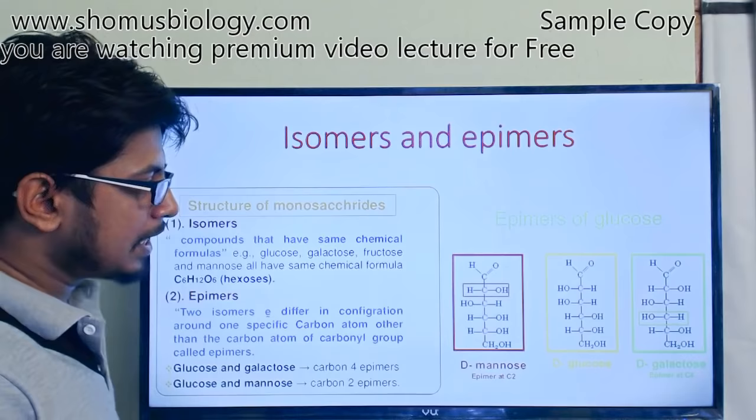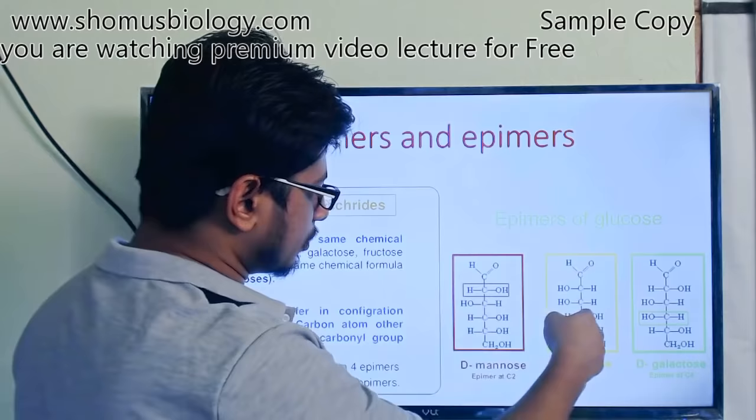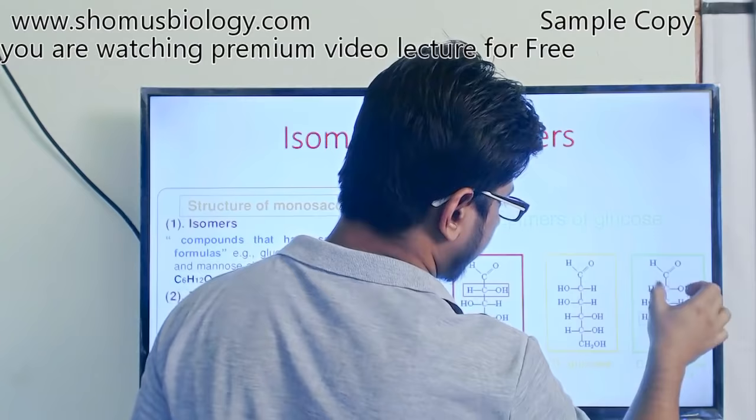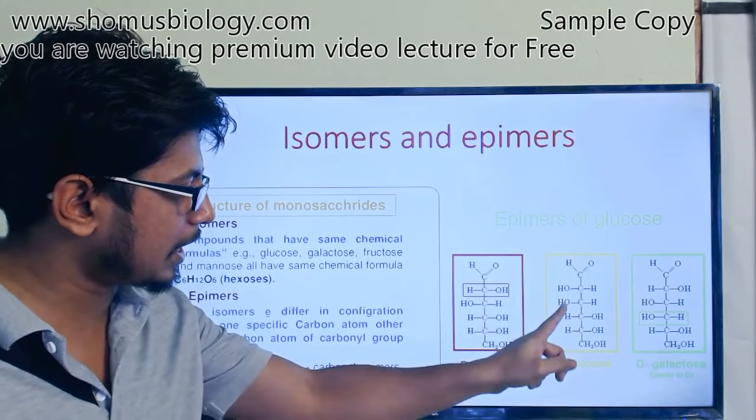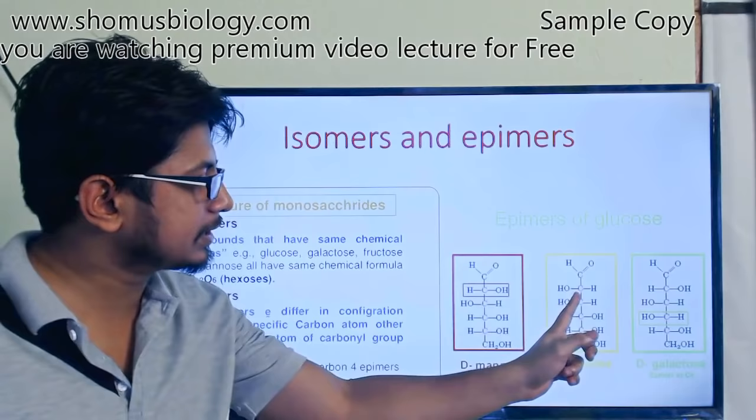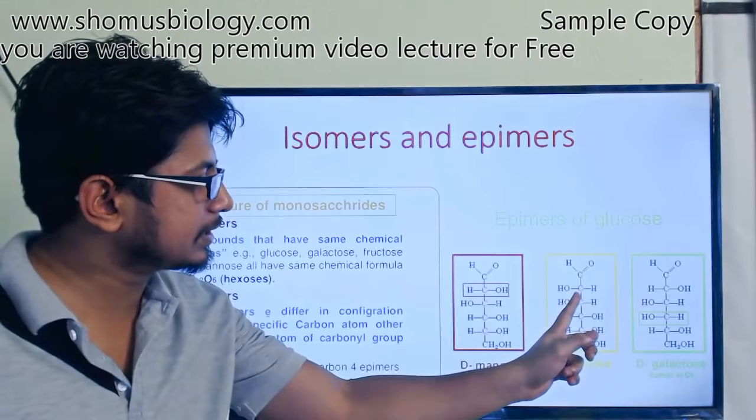The second epimer pair is glucose and mannose. In mannose, at carbon number 2, the OH is on the right-hand side, whereas in glucose it is on the left-hand side. This single positional difference at carbon 2 defines them as epimers.